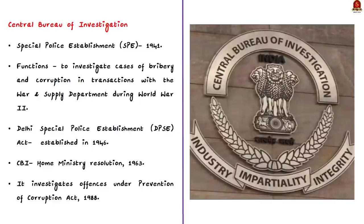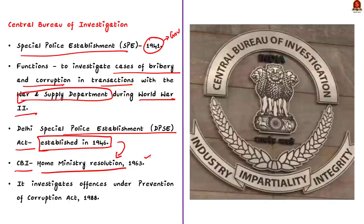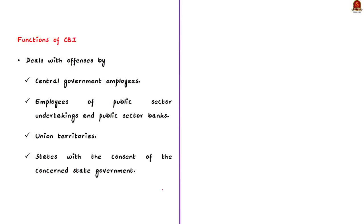The CBI traces its origin to the Special Police Establishment, set up in 1941 by the British government to investigate cases of bribery and corruption in transactions with the War and Supply Department during World War II. Even after the war, the center felt the need to investigate bribery cases of its employees, so the Delhi Special Police Establishment Act was established in 1946. The organization acquired its current name — Central Bureau of Investigation — through a Home Ministry Resolution in 1963. It investigates offenses under the Prevention of Corruption Act 1988, the Indian Penal Code, etc. The CBI is headed by a Director, who is provided security of tenure of two years by the Central Vigilance Commission Act 2003.